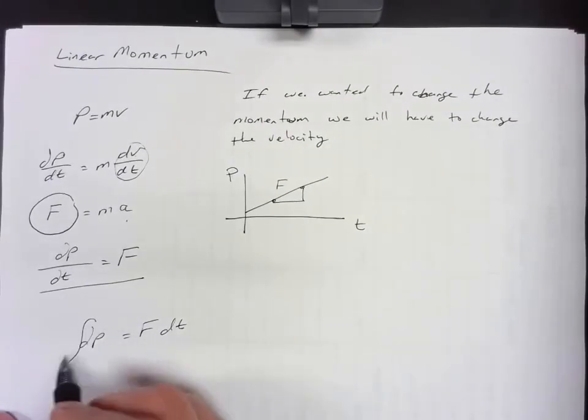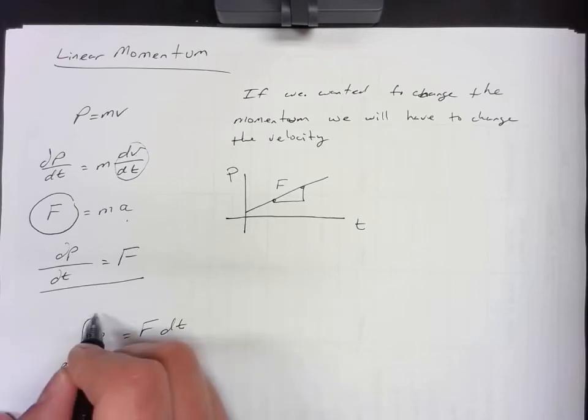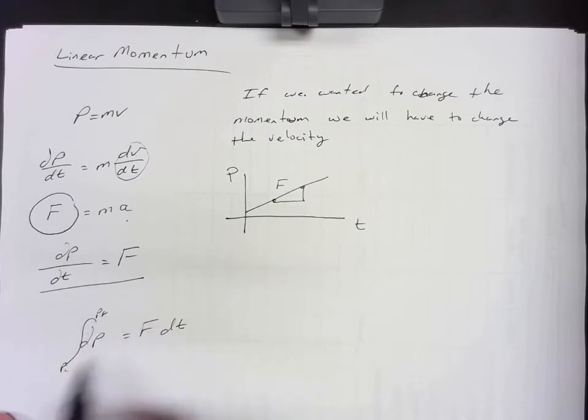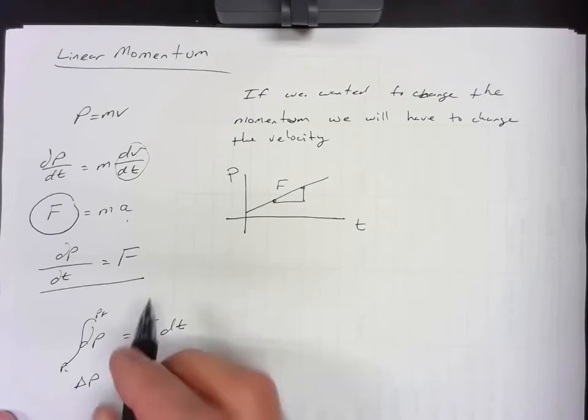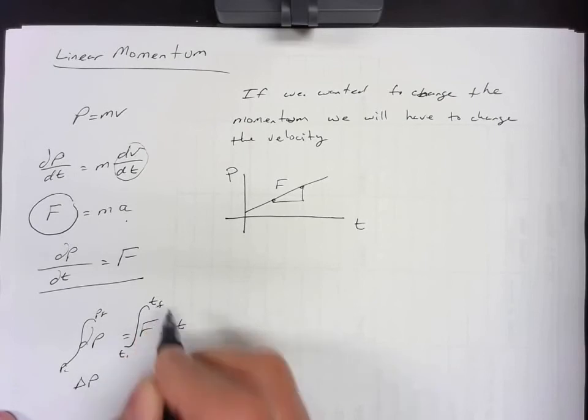The integral of the changes in momentum added up between, well, just gives us the total change in momentum. Right? So this would be from the initial momentum to the final momentum, which gives us the change in momentum. And this will evaluate between two periods of time.